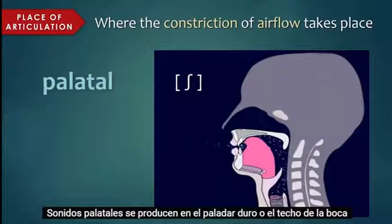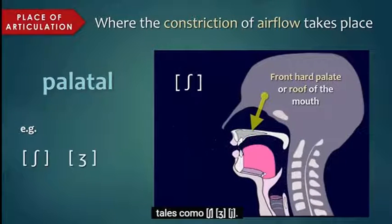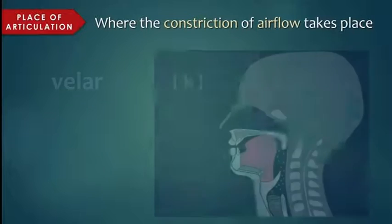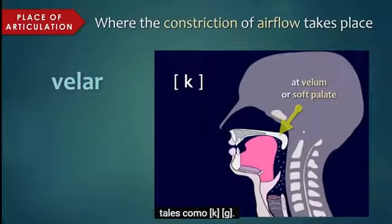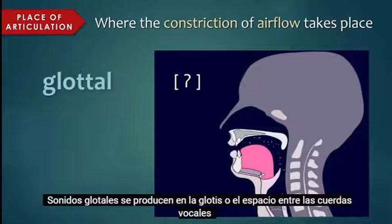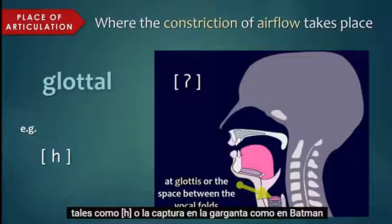Palatal sounds are produced at the hard palate, or the roof of the mouth, such as sh, zh, y. Velar sounds are produced at the velum, or soft palate, such as k, g. And glottal sounds are produced at the glottis, or the space between the vocal folds, such as h, or the catch in the throat, as in Batman.